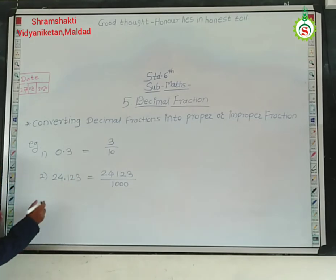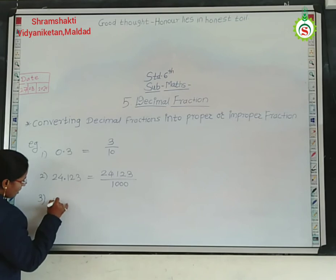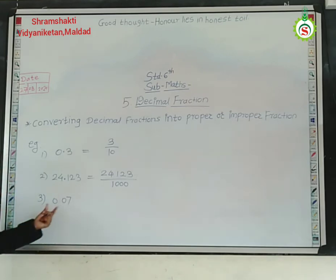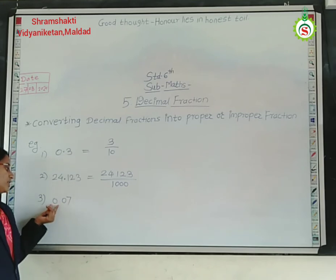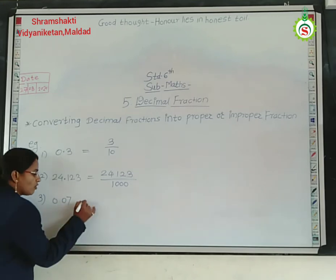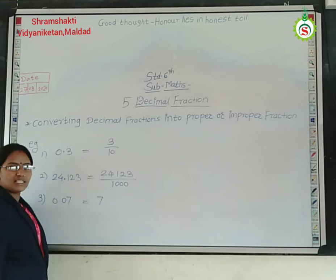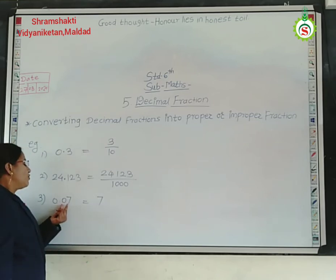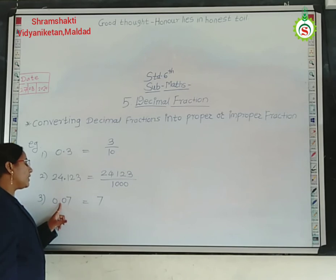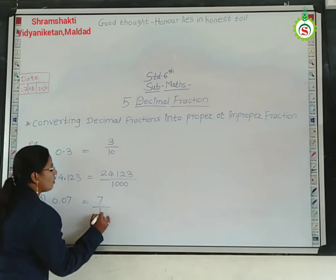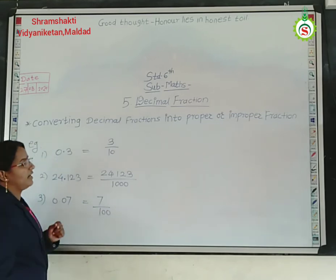Third example: 0.07. Write down the numerator as it is — 07. Now measure how many digits are after the point: 2 digits. So the denominator is 100. We get 7 upon 100.